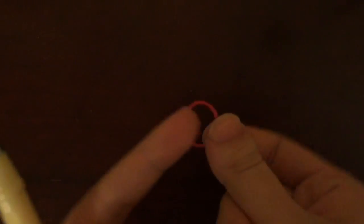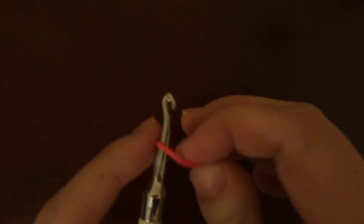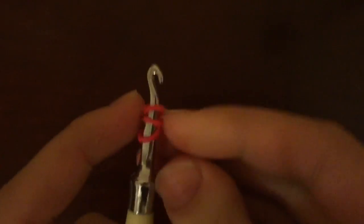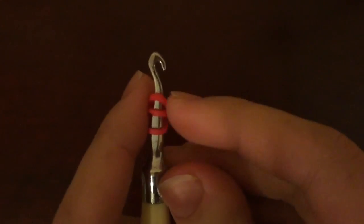To start off I will be taking one red rubber band and my hook and I'm going to wrap this rubber band around my hook so that there are 3 loops: 1, 2, and 3.